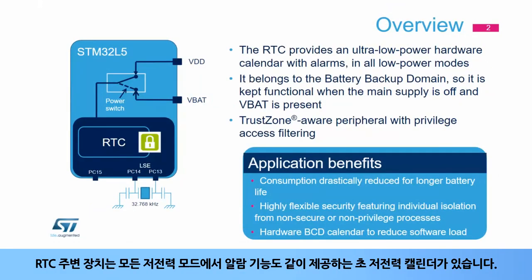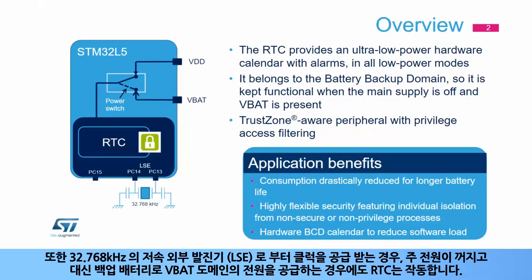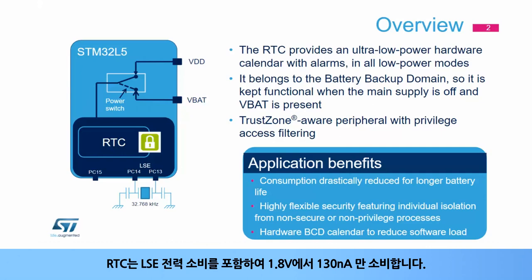The RTC peripheral features an ultra-low-power calendar with alarms, which run in all low-power modes. When clocked by the Low-Speed External Oscillator, or LSE, at 32.768 kHz, the RTC is functional even when the main supply is off and when the VBAT domain is supplied by a backup battery. The RTC consumes only 130 nA at 1.8 V, including the LSE power consumption.